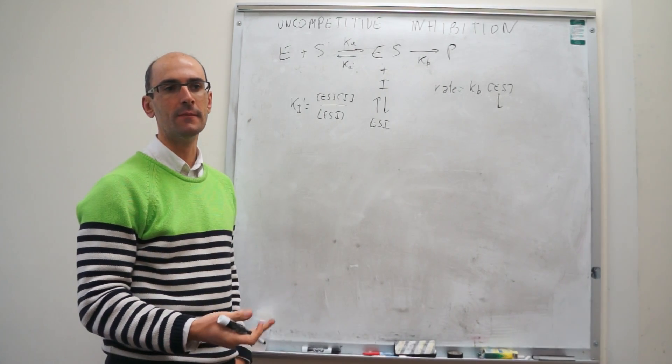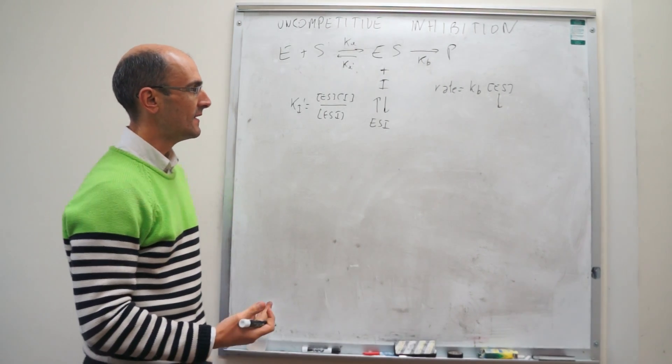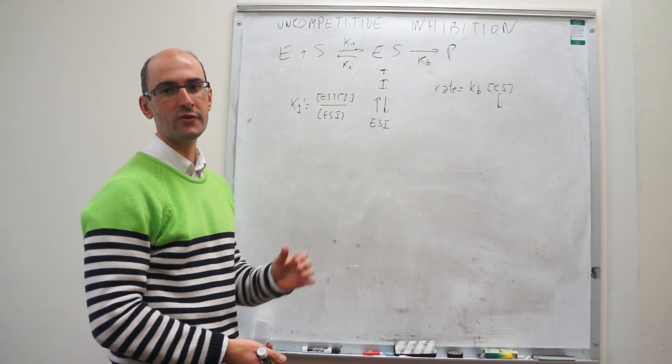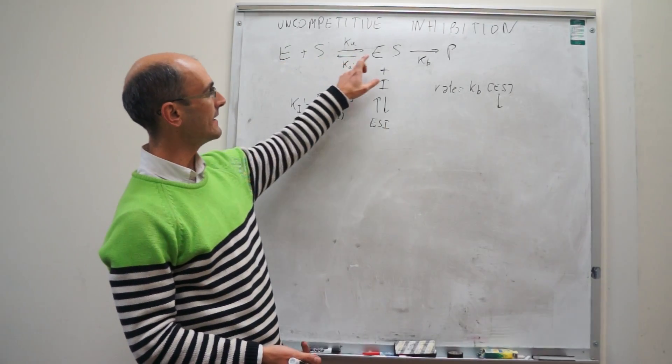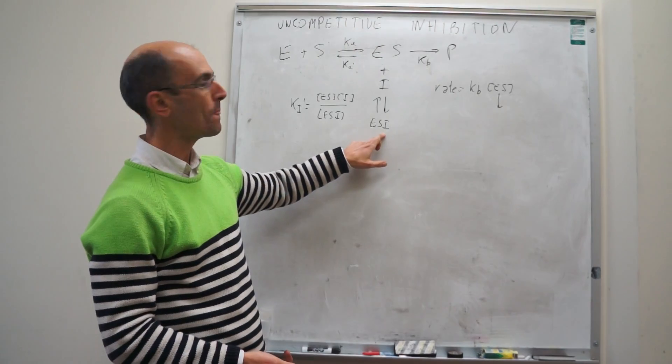You set up the mass balance of the enzyme, and then you just find the terms. The mass balance of the enzyme is going to have three terms. The initial concentration of enzyme is going to be equal to free enzyme, ES, and ESI.